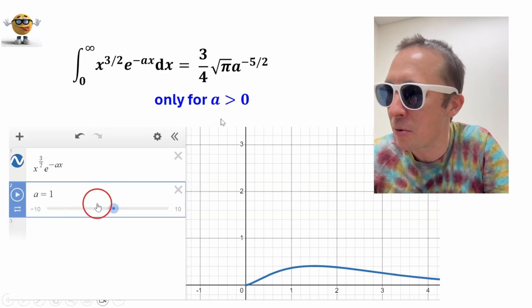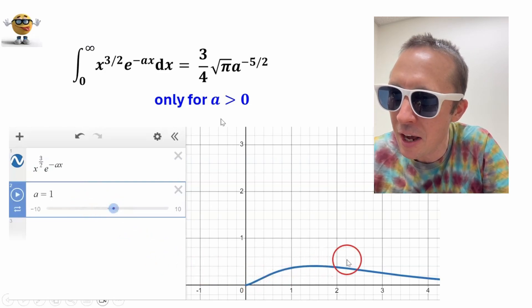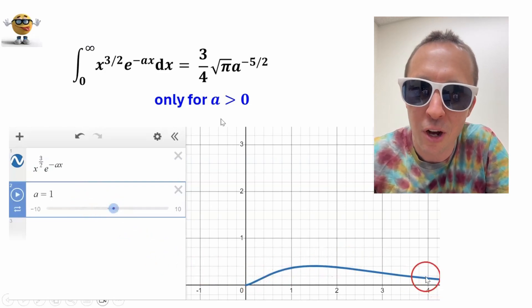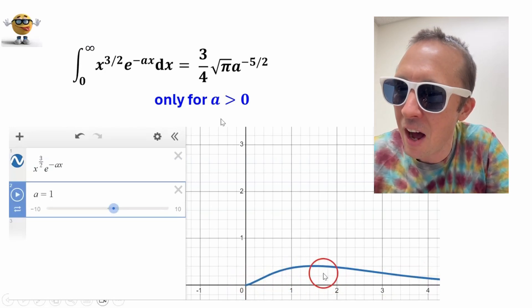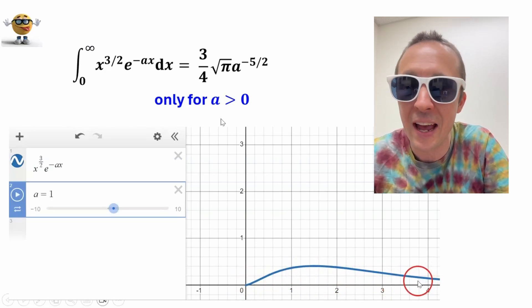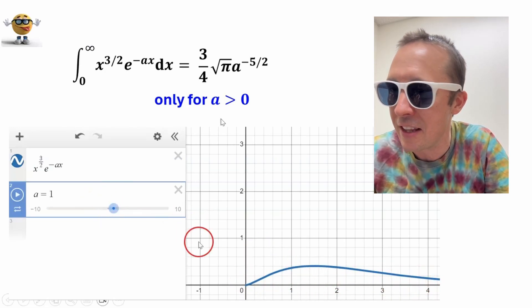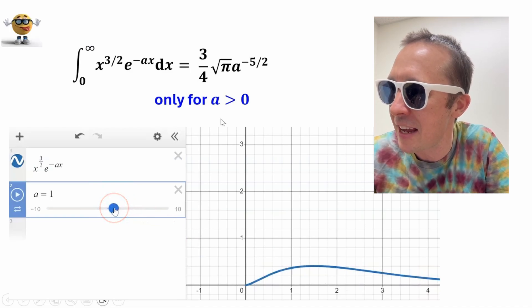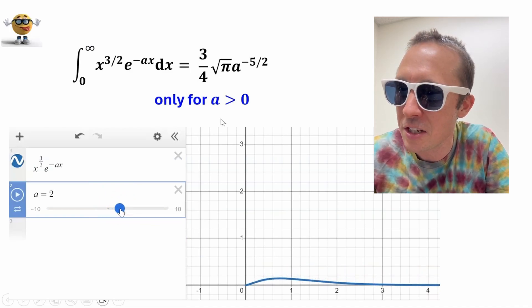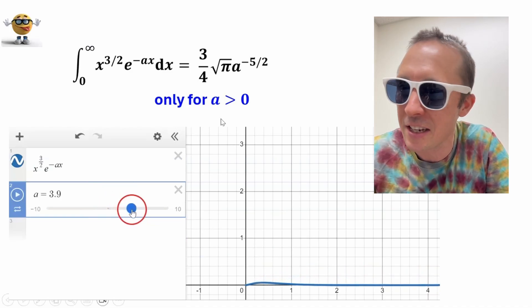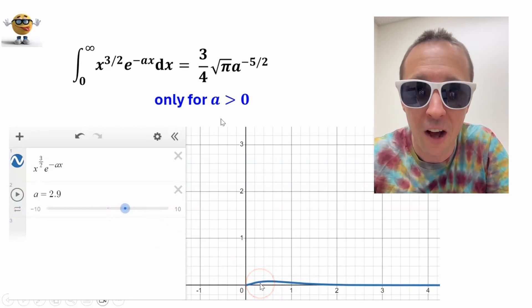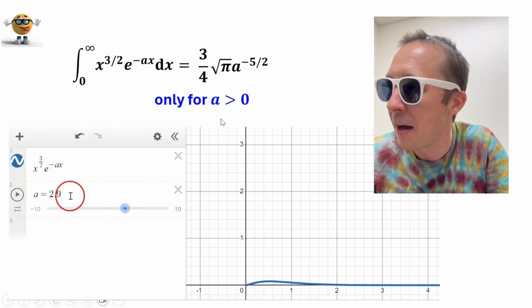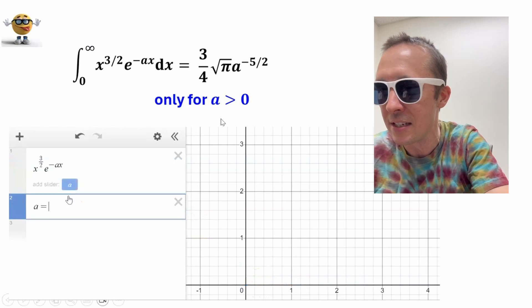you see that the curve goes up, and then it goes down, and it's actually asymptotic with the x-axis, so there's a defined area under the curve as x goes to infinity, the integral is convergent, and as a increases, the curve just goes closer and closer to the x-axis, and we still have a convergent integral, a defined area under the curve,